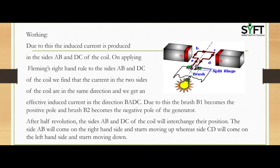Let us suppose the generator coil ABCD is initially in the horizontal position. As the coil rotates in the anticlockwise direction between the north and south poles of the magnet, side AB of the coil moves down cutting the magnetic lines of force near the north pole, and side DC moves up cutting the lines of force near the south pole. Due to this, induced current is produced in sides AB and DC of the coil.